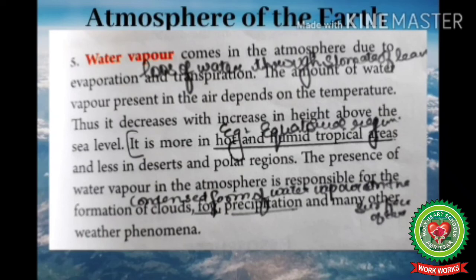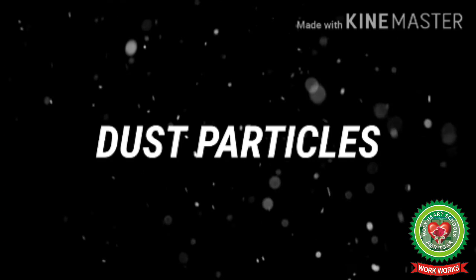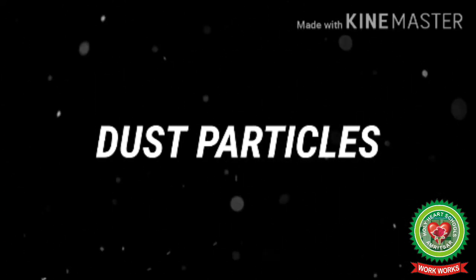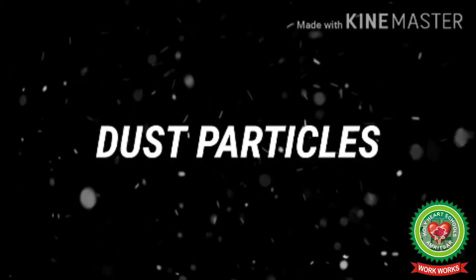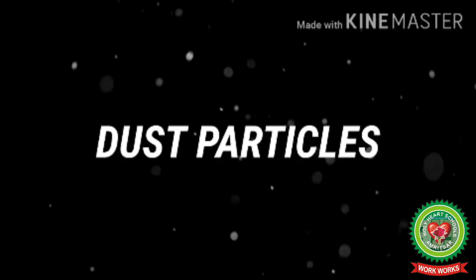Water vapor is more in hot and humid tropical areas, for example equatorial areas, and less in deserts and polar regions. The presence of water vapor in the atmosphere is responsible for the formation of clouds, fog — which is a condensed form of water at or near the earth's surface — precipitation such as rain, snow, and hail, and many other weather phenomena.